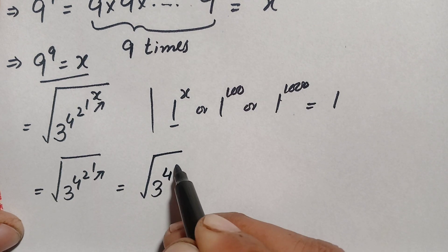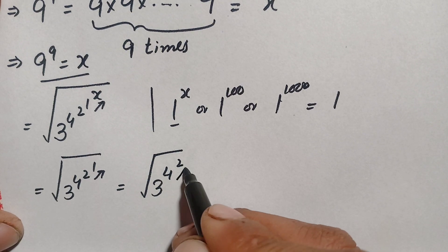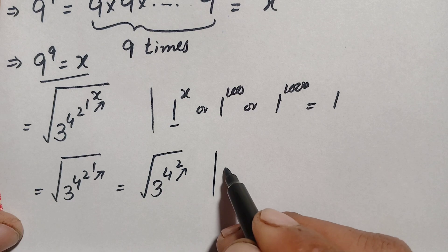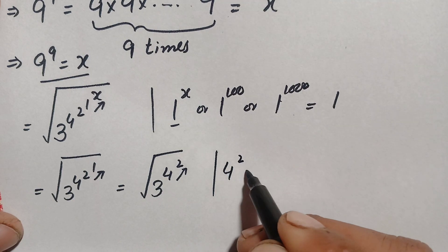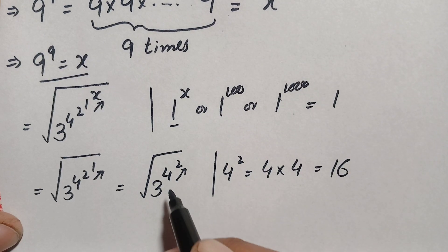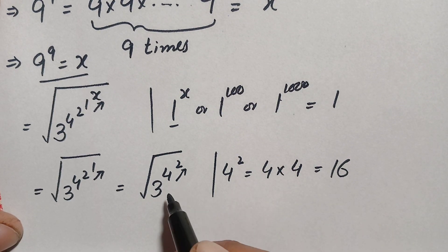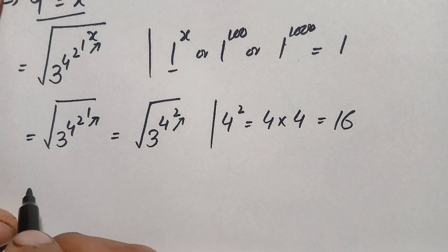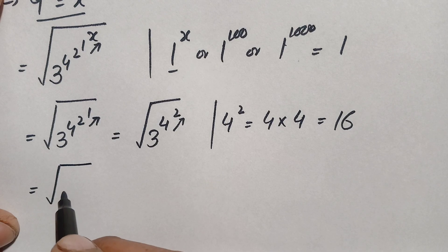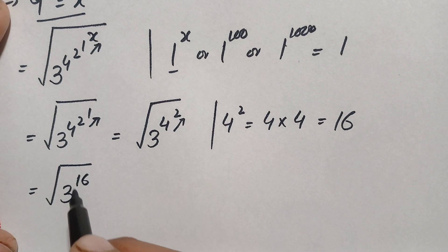Now we find the value of 4 raised to the power 2, which is 4 squared. 4 raised to the power 2 is 4 times 4, which equals 16. We replace the power 4 raised to the power 2 with 16, so the expression becomes the whole square root of 3 raised to the power 16.